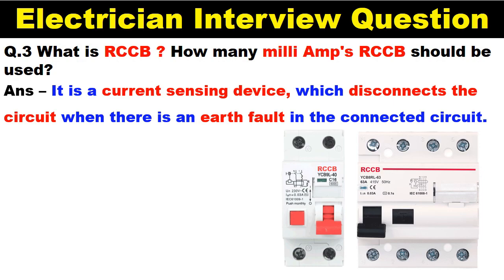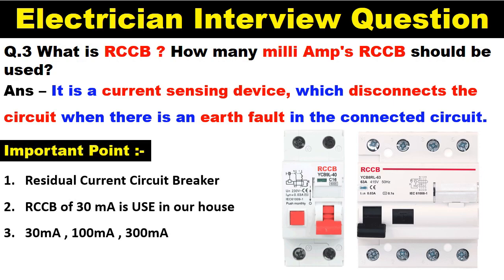Your answer should be: RCCB is a kind of current sensing device which disconnects the circuit due to an earth fault in a connected circuit. As for how many milliamperes RCCB to use — 30 milliampere RCCB is used in our home. In industries, 100 milliampere RCCB is also used, because 30 milliampere RCCB trips too often, and to reduce this tripping, 100 milliampere RCCB is used.